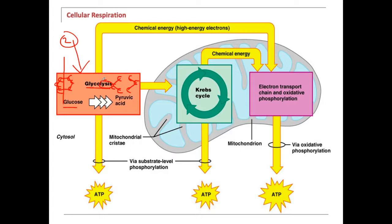Some ATP is made from glycolysis — not a lot, but some is made from anaerobic respiration. No oxygen is required or available to do this, and it also takes place not in the mitochondria but in the cytosol or cytoplasm of the cell.